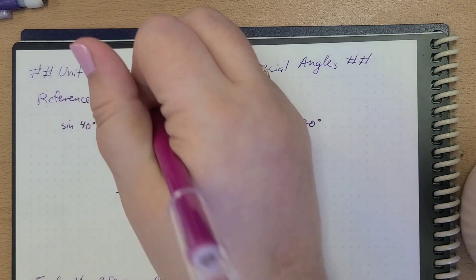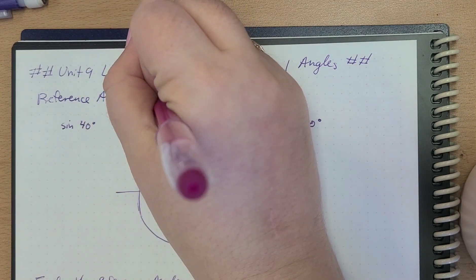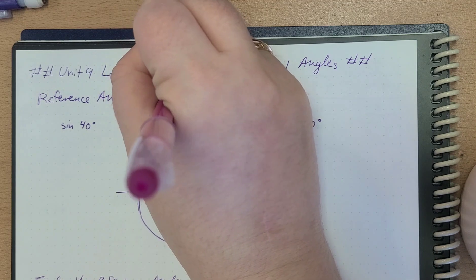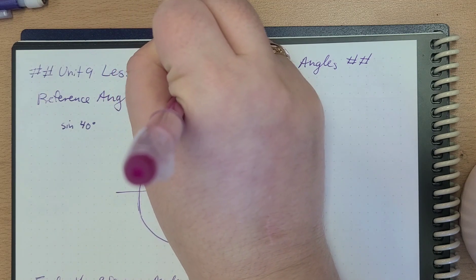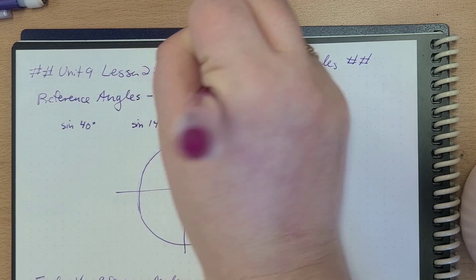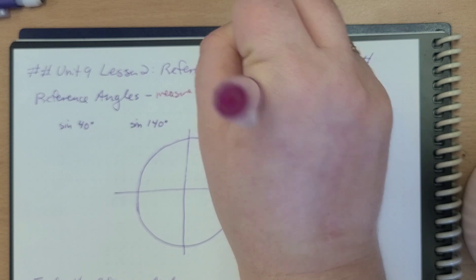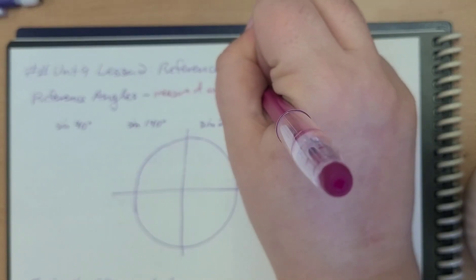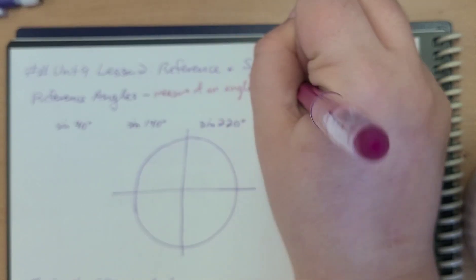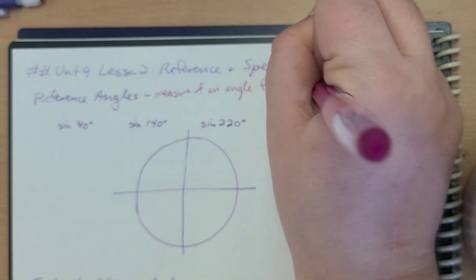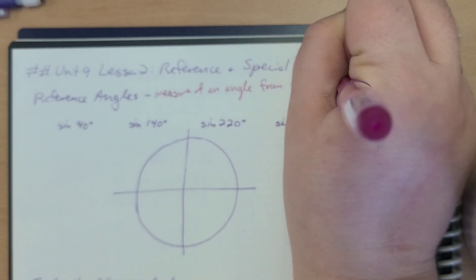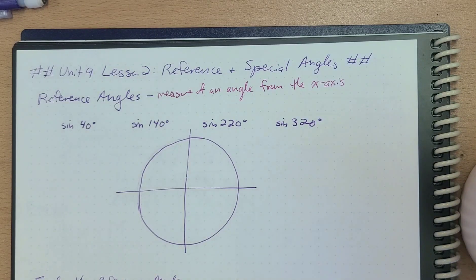Reference angles are the measure of an angle from the x-axis. This makes sense — it refers to our reference triangles, which we know are measured from the x-axis.